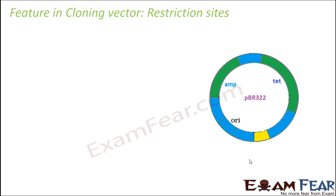The next important feature is the restriction sites. As the name suggests, restriction sites are related to restriction enzymes. All restriction endonuclease enzymes need a specific recognition sequence — only when they see that sequence do they do their job, which is to cut DNA at specific locations. Those specific locations are determined by the recognition sequences, and wherever those sequences are present, they are known as restriction sites.